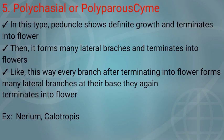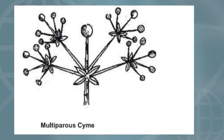The very last type of cymose inflorescence is Polychasial or Polyparous cyme. In this type, the peduncle shows definite growth and terminates into a flower. Then it forms many lateral branches which terminate into flowers. Every time the branches terminate into flowers, they form many branches at their base which also terminate into flowers. It is a continuous process. Examples: Nerium and Calotropis. In the diagram, the middle peduncle terminates into a flower, forms many branches at the base, which also terminate and form more branches continuously.